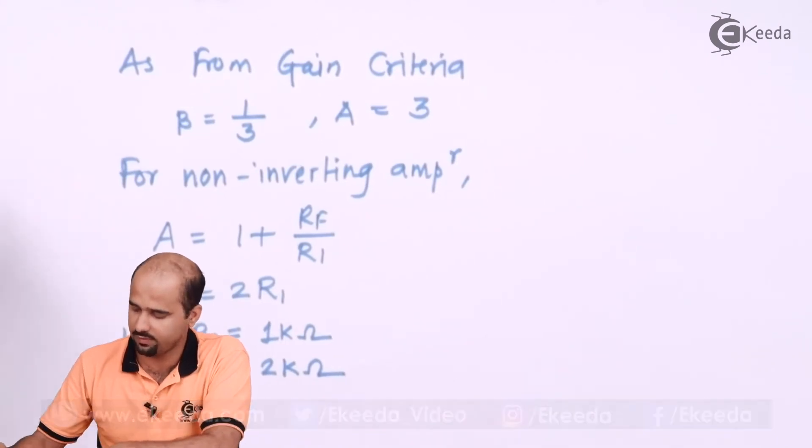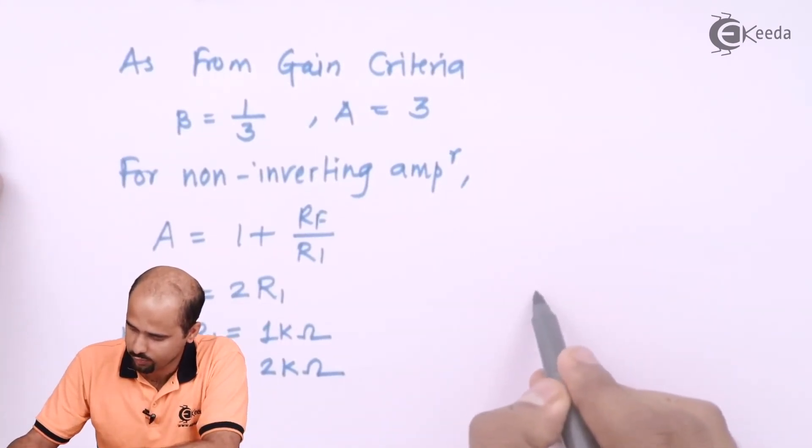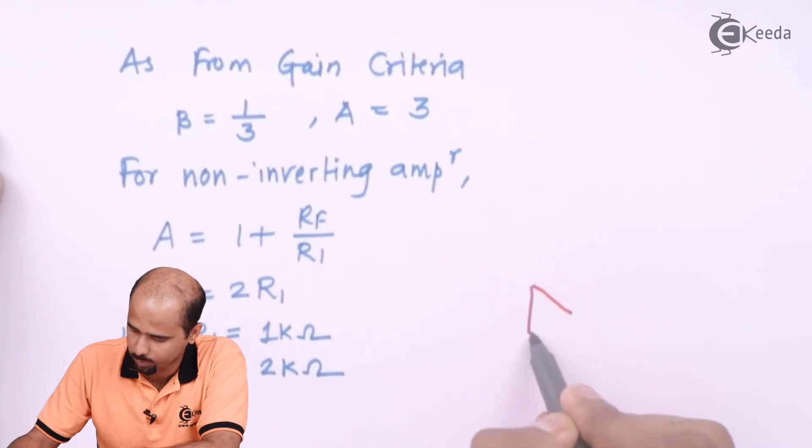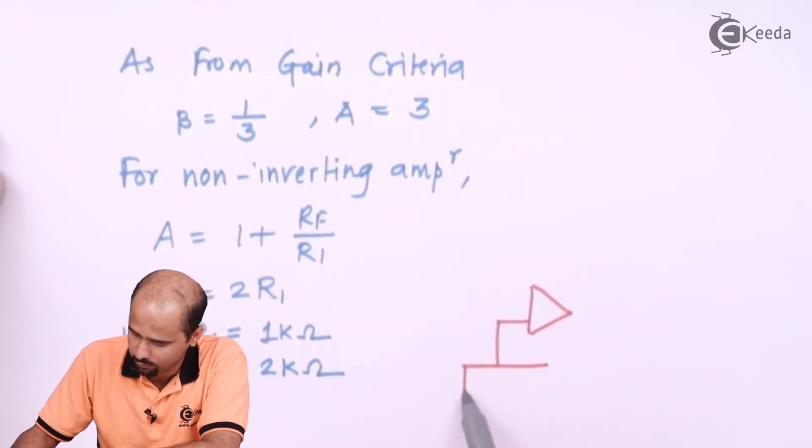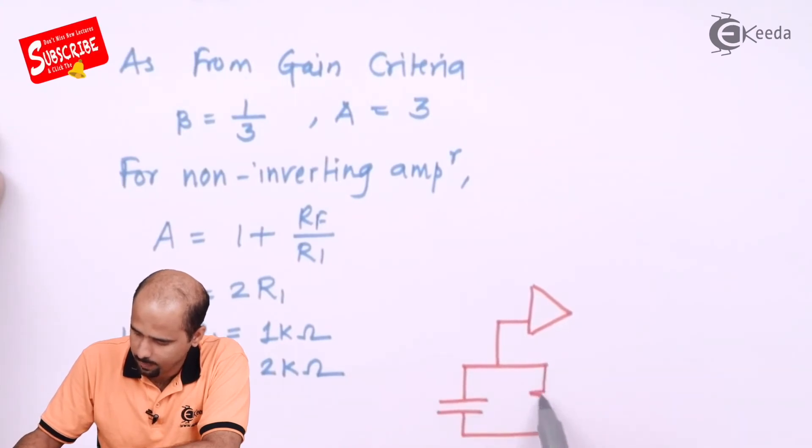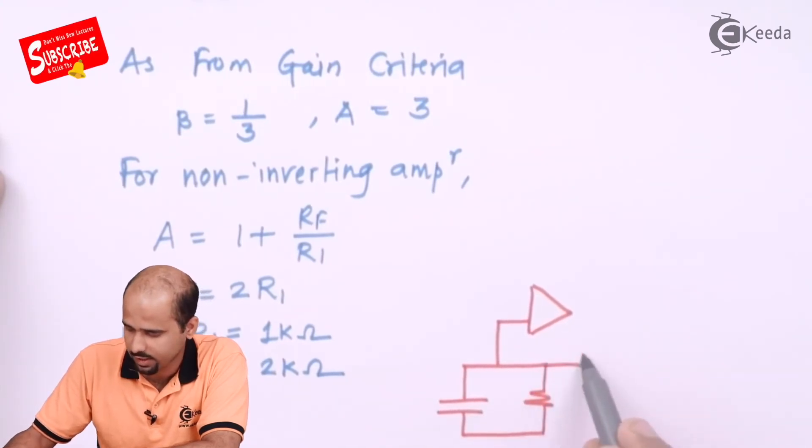So here we have got that particular value of R1 and RF, and now we are in the position to draw that particular circuit with the calculated value. So we can say that this is particularly OPAMP, and here we are getting the value of C and R same as that of calculated value.